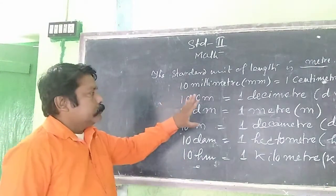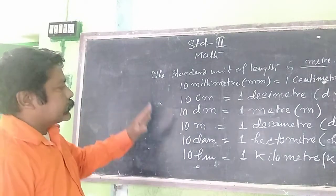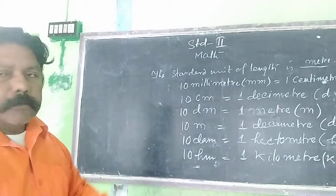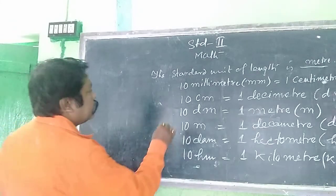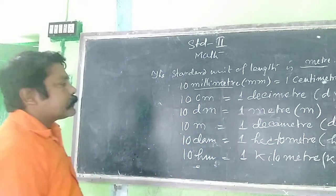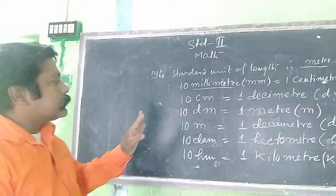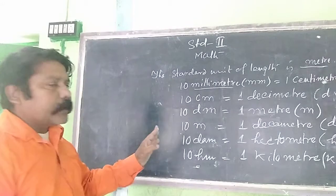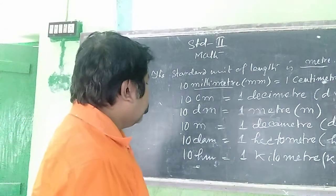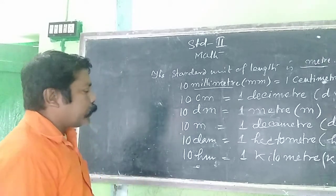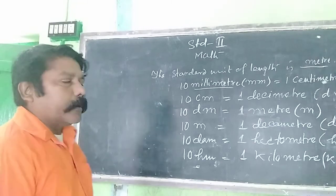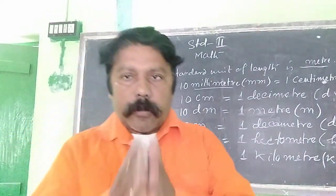The relation of these units and sub-units is 10 times: 10 millimeters equals one centimeter, 10 centimeters equals one decimeter, 10 decimeters equals one meter, 10 meters equals one decameter, 10 decameters equals one kilometer. Namaskar.